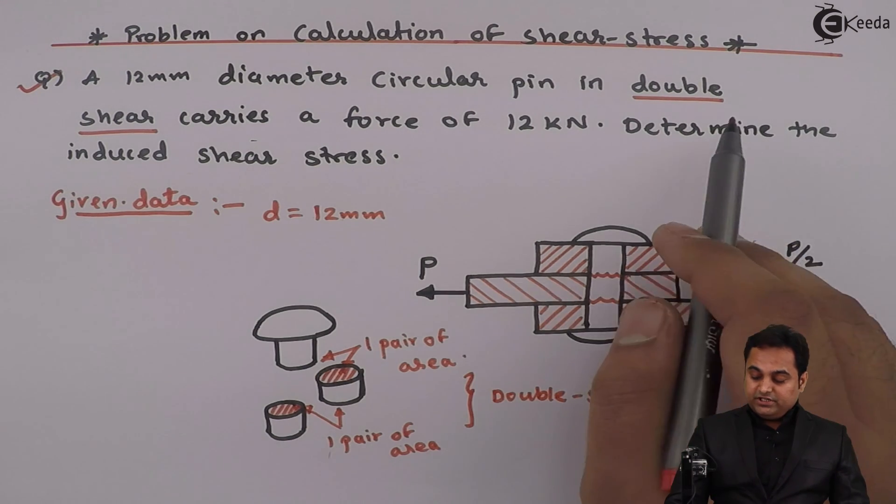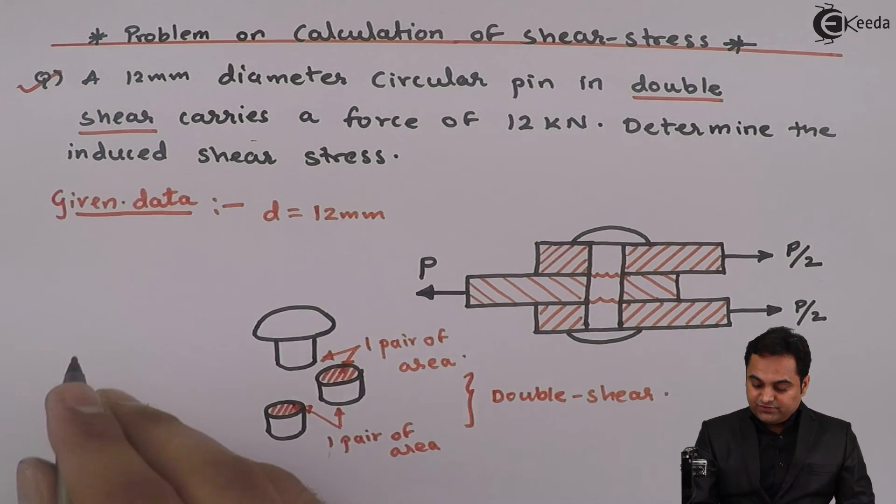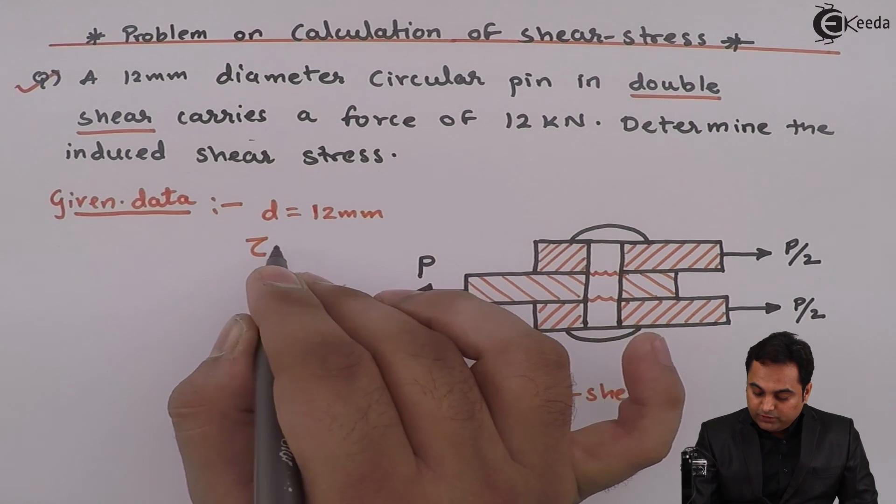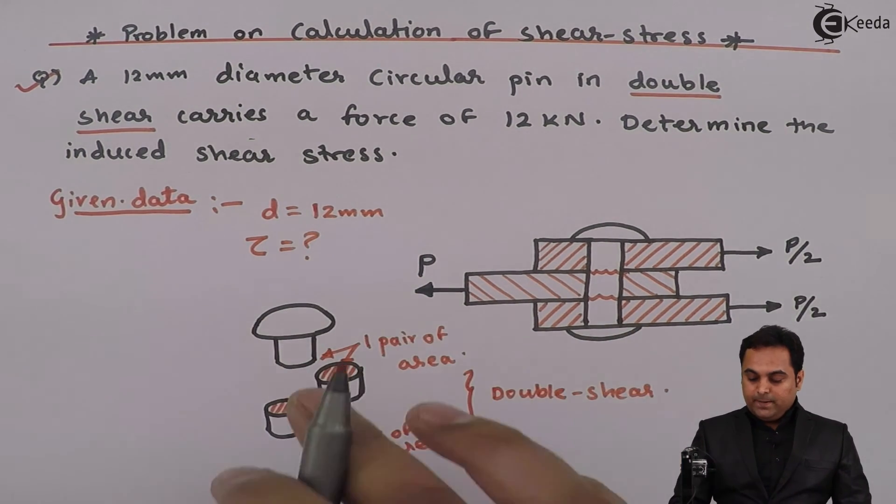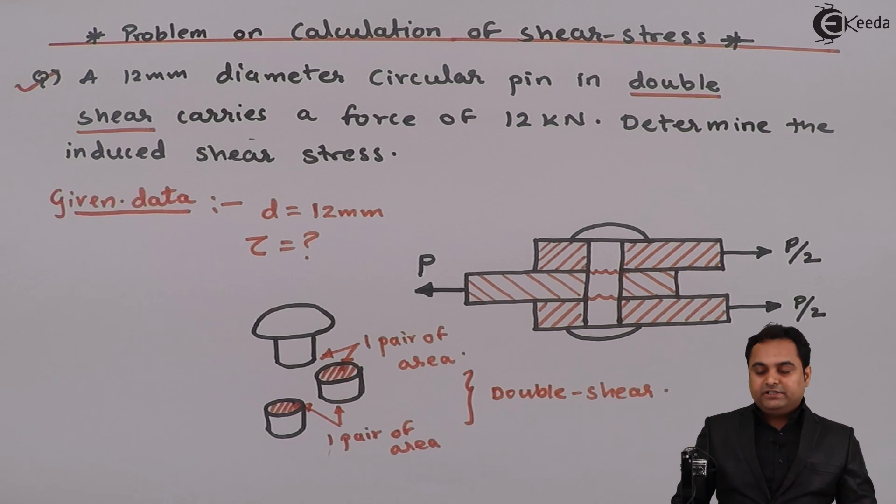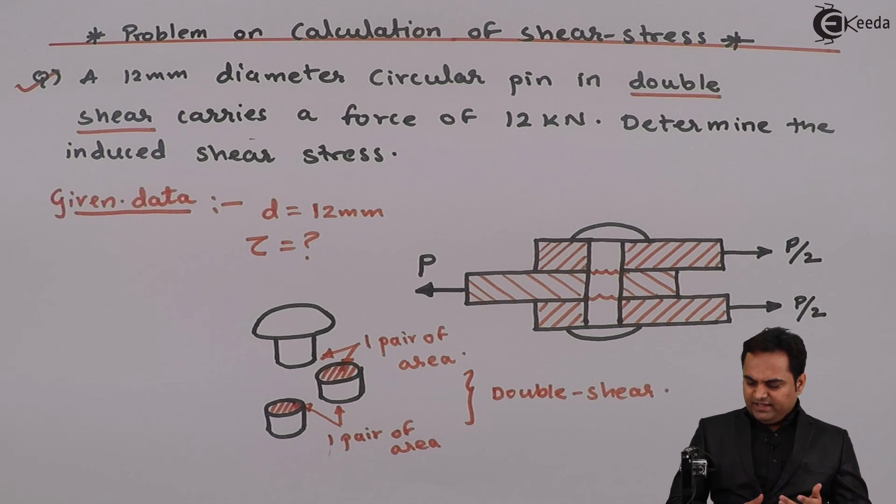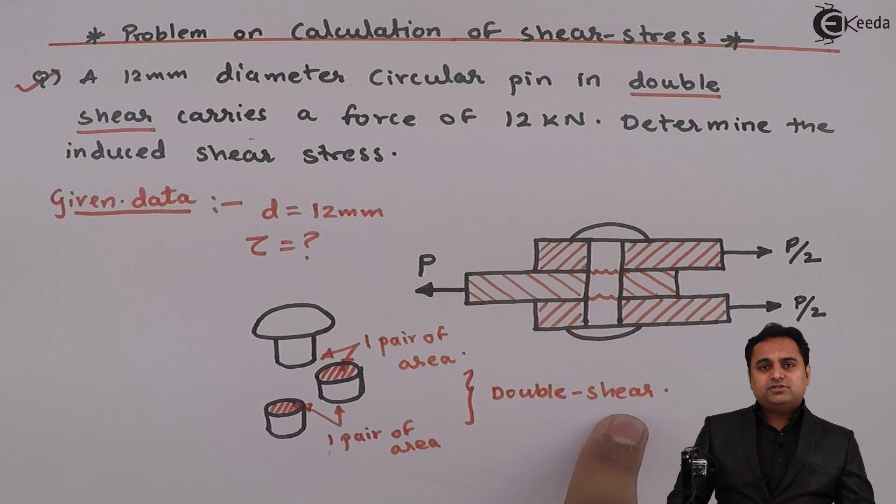The question is to determine the induced shear stress. We have to find out how much shear stress is induced in this pin or rivet. To calculate the shear stress, let us start with the calculation of shearing area first.